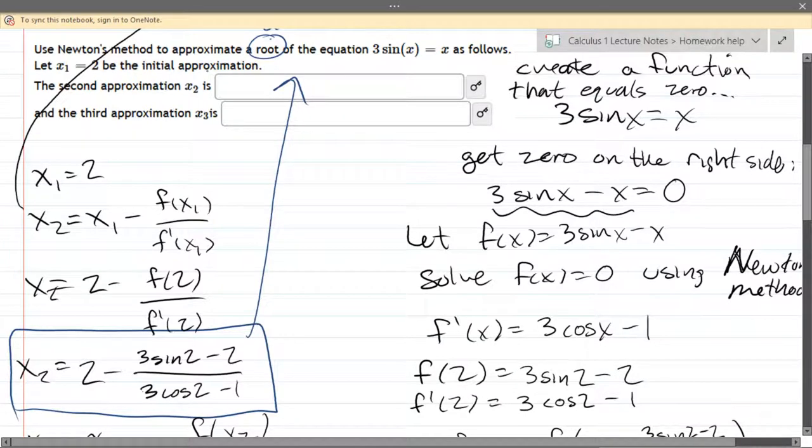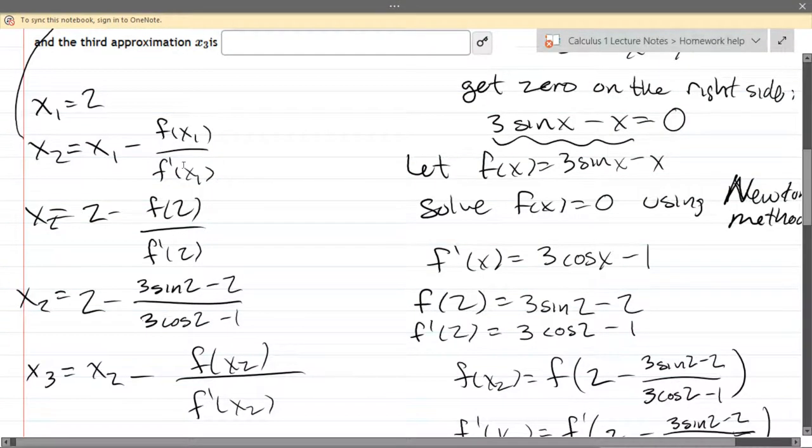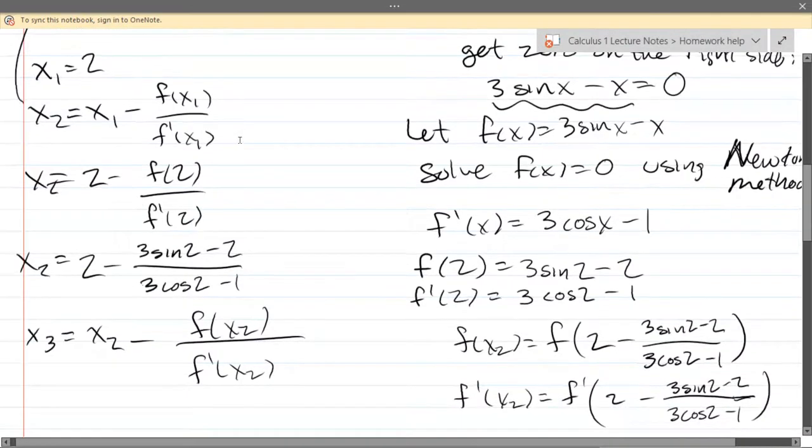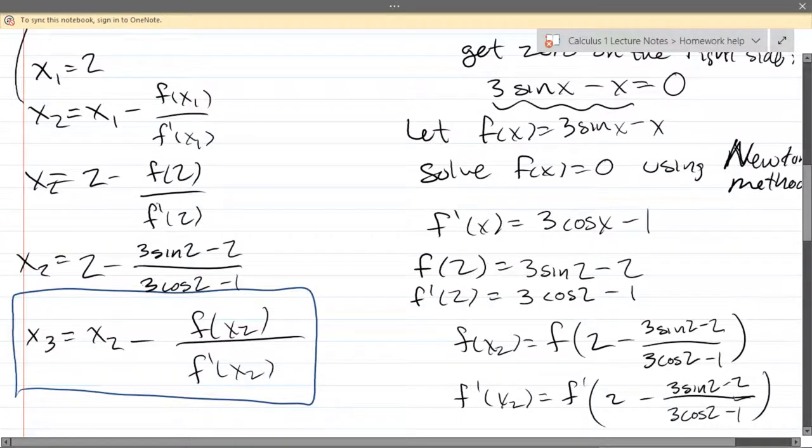Unfortunately, x3 is even uglier, so I'm not going to go through all the steps because it's a lot of writing. I will go through the first step. This is just using that formula above to start from x2 and get x3. You plug in x2 into the function on the top, x2 into the derivative on the bottom, and then take your x2 value and subtract that number.